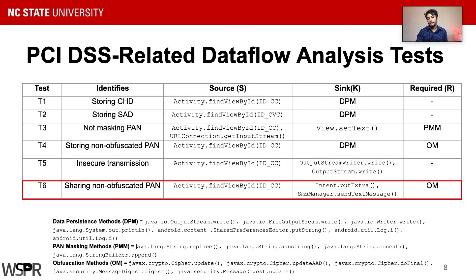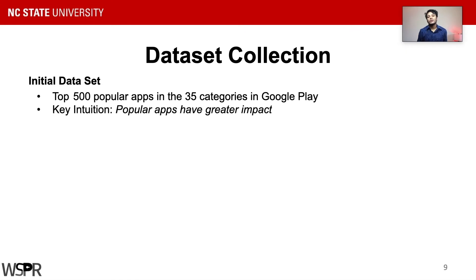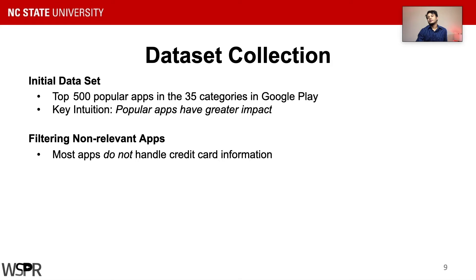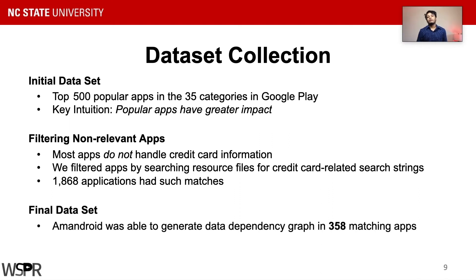For building our dataset, we first scraped the top 500 apps from every category in Google Play. The reason for choosing the most popular applications was that popular apps are going to be impactful. However, as we had seen from our prior study, most applications would not be collecting credit card information, which would increase analysis time significantly. Therefore, we filtered this set by looking into the resource files of the APKs for any credit card-related strings, narrowing our scope down to 1,868 apps and saving a lot of computation time, at the price of including false negatives. We ran UIRef and Amandroid on these applications and finally got 358 data dependency graphs; the remaining ones could not be analyzed or did not collect credit card information.